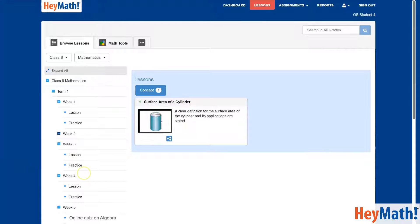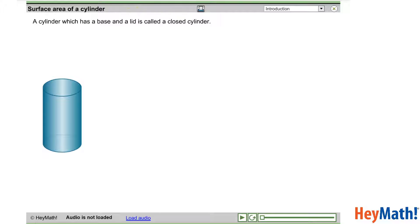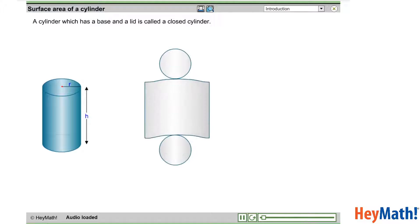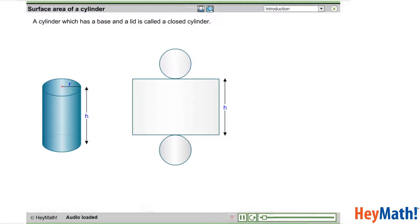Now, let me show you a typical HeyMath lesson. Here is where I load the audio. By opening it out along its height, can you see that the surface area of the closed cylinder is the area of a rectangle plus the area of two circles of radius R?